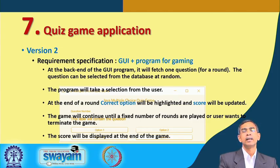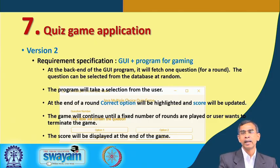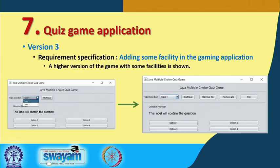The game will continue for, say, 15 rounds, or until the user chooses to quit — a quit option should be offered to the user. When the game is over, the total score that the player has achieved will be displayed on the screen. The third version involves improving the interface; as the interface changes, all the back-end programs also have to be changed. The idea is kept simple so you can implement and handle the project in the shortest possible time.